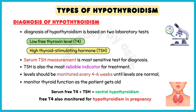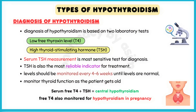The diagnosis of hypothyroidism is based on two laboratory tests: number one is low free thyroxine level, and number two is high thyroid stimulating hormone. Serum thyroid stimulating hormone measurement is the more sensitive test for diagnosing hypothyroidism. TSH is also the most reliable indicator for treatment. The TSH level and symptoms should be monitored every four to six weeks until levels are normal, then four to six months later.